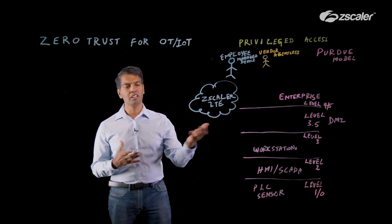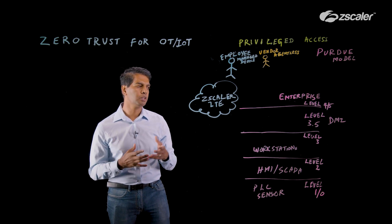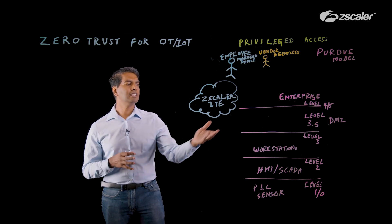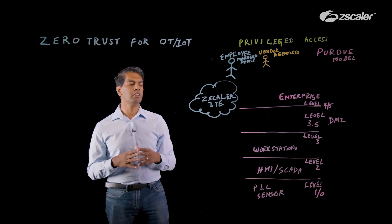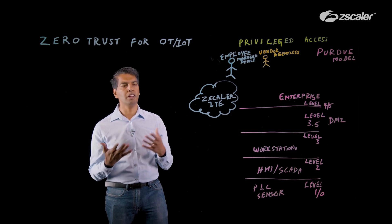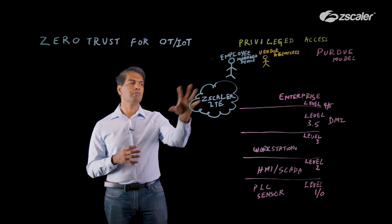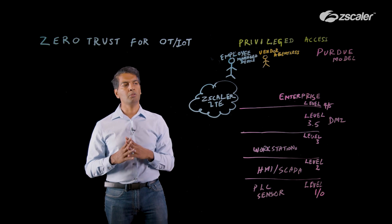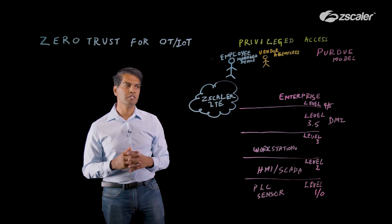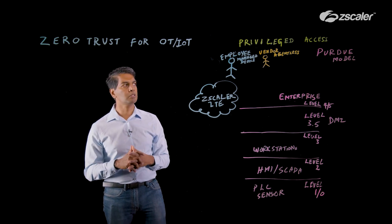The workstation layer is when you're starting to see more of the IT equipment. You'll have historians and things like that. The DMZ is where you're connecting that to your corporate environment at the enterprise level — level four and five. For context, I've indicated where the Zscaler solutions exist as part of our solution here.